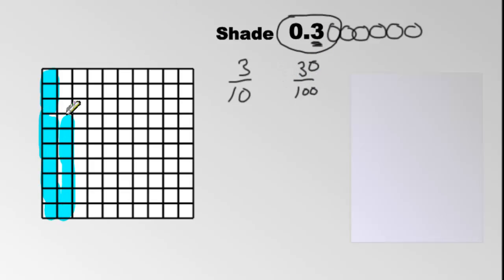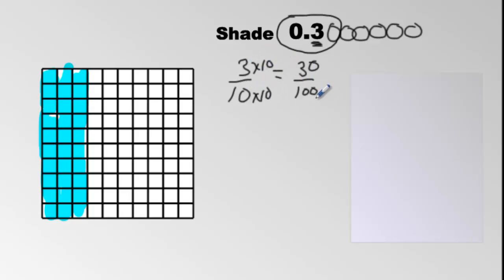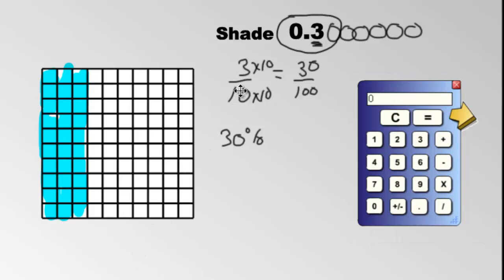The other way to do this, without writing a string of zeros, is to convert the denominator from 10 to 100 by multiplying by 10 — multiply top and bottom by 10 — and you get 30 over 100, which as a percent is 30%. In this case you don't need a calculator; you can just figure it out using common sense.